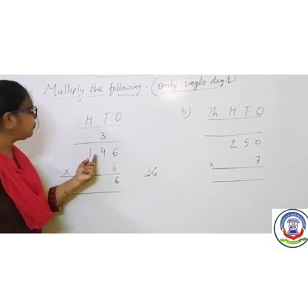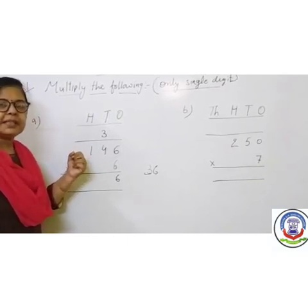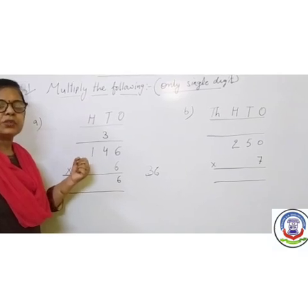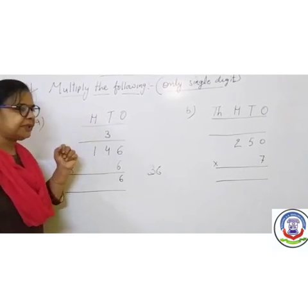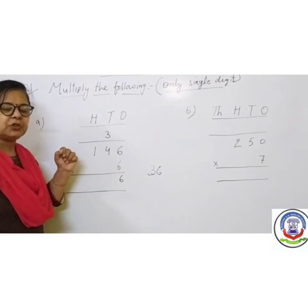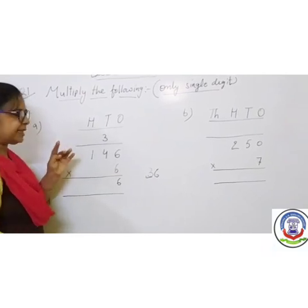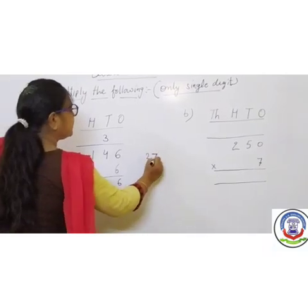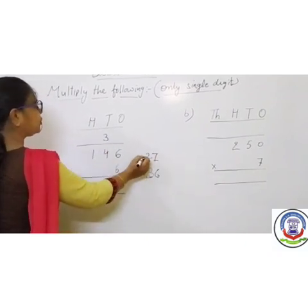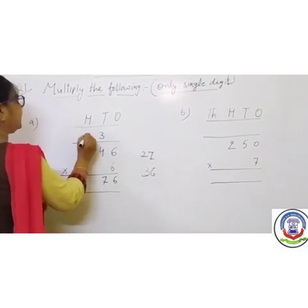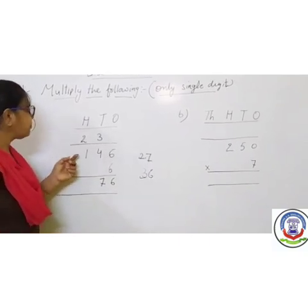Next, 10's place. 6 multiplied by 4 — 6 fours are 24. We have carry forward 3, so 24 plus 3 equals 27. We write 7 in the 10's place and carry forward 2 to the 100's place.